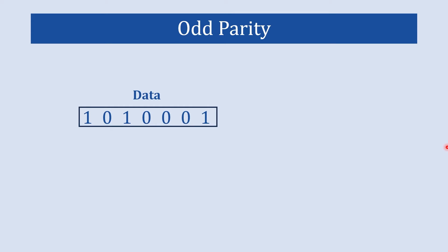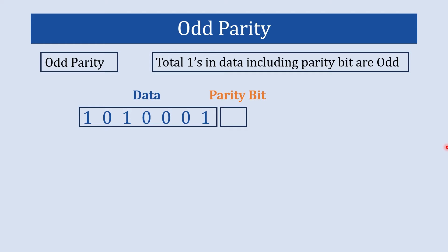Now let's understand odd parity with an example. This is the data we want to send and we will keep the parity bit blank for now. The definition of odd parity: the total number of ones in data including the parity bit should be an odd number. Here in our data we have three ones, which is already an odd number. So we make the parity bit zero — that contributes zero ones — so the total ones including parity bit is three plus zero, which equals three, an odd number. This is how we make odd parity.